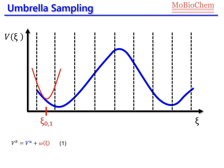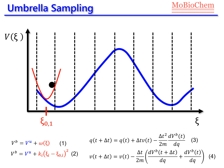In window number one, we apply an artificial potential — represented in red — on top of the real potential, represented in blue. In total, the bias potential equals the real (unbiased) potential plus the artificial potential, indicated by the superscript U. Usually we use a harmonic function depending on the reaction coordinate as the artificial potential. This artificial potential keeps the system inside window number one during the molecular dynamics simulation.